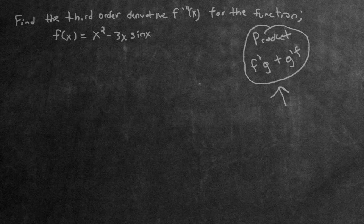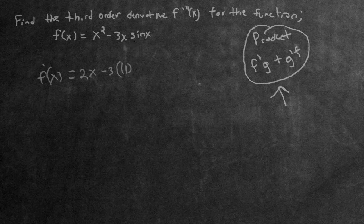Let's go ahead and find the first order derivative. The first order derivative, f prime, is going to be equal to — well, what's the derivative of x squared? That's going to be 2x. We factor out the negative 3 for convenience. Now we have to use the product rule to find the derivative of x sine x. So f is going to be x, and g is going to be sine x. What's the derivative of f — x? That's just going to be 1. Then we leave g alone, g is sine x, so we just put a sine x right here.